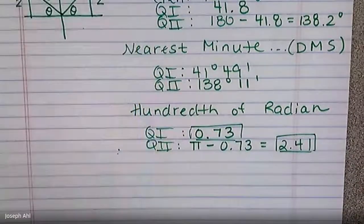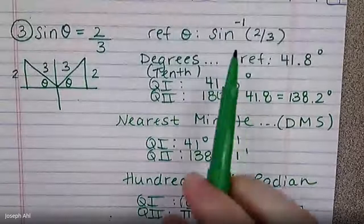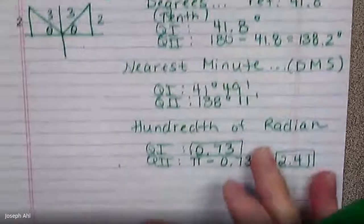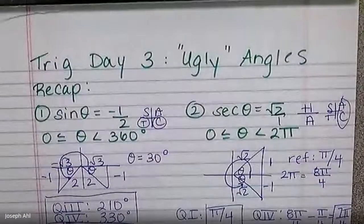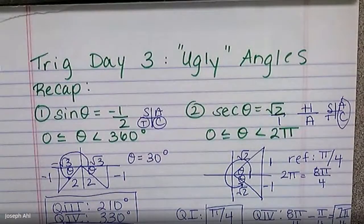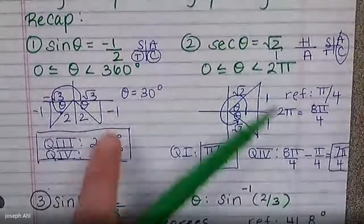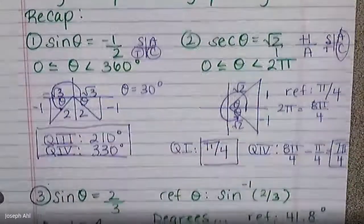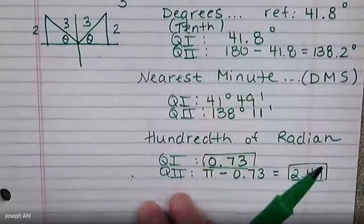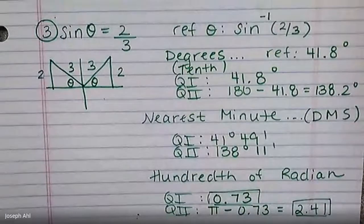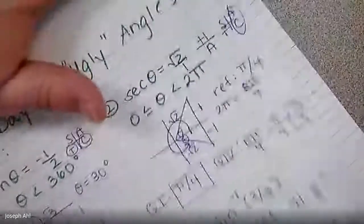So you really just have to pay close attention to the directions. Do I want the nearest tenth of a degree, the nearest minute, the nearest hundredth of a radian? You can see why I've called these ugly angles, because we have to round them to a certain place and they don't look as clean as 210, 330, pi over 4, 7 pi over 4. But that's okay. We can still find them.